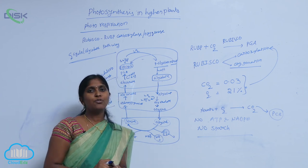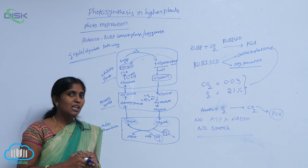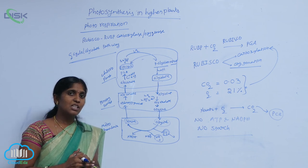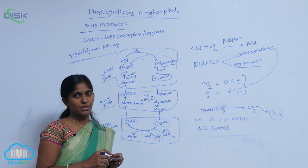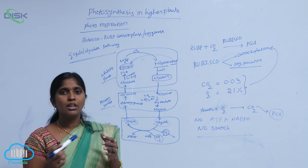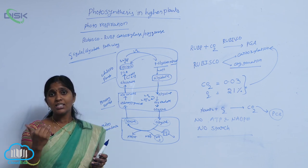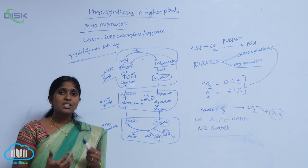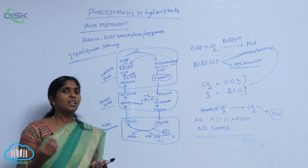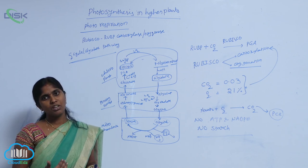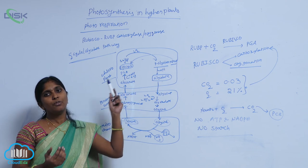In C4 plants, photorespiration is absent. Why? In the bundle sheath cells, the decarboxylation reaction converts malic acid to pyruvic acid — that is, C4 acids are turned into C3 acids. During that phase, carbon dioxide is released and used for the C3 cycle there. Since the availability of CO2 is already more in the bundle sheath cells of the C4 cycle, C4 plants are able to escape from photorespiration.